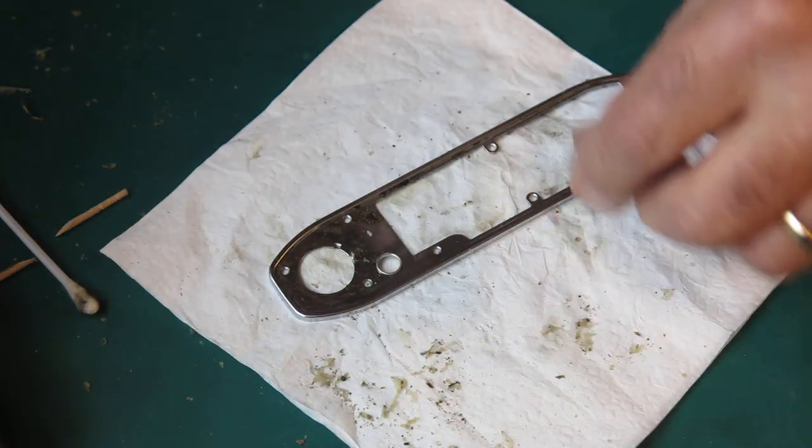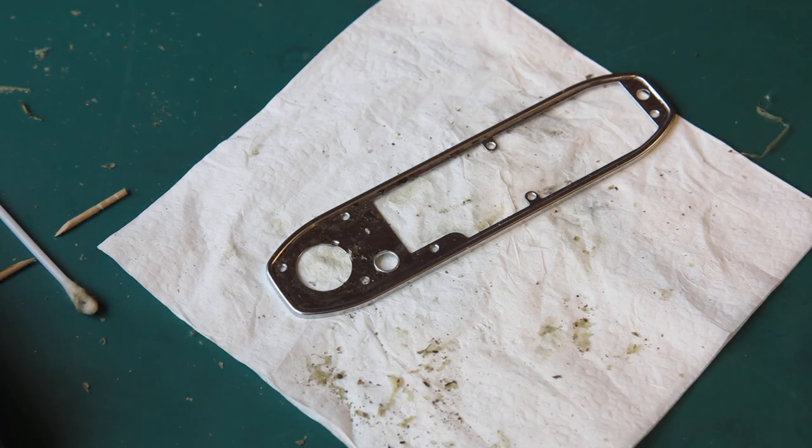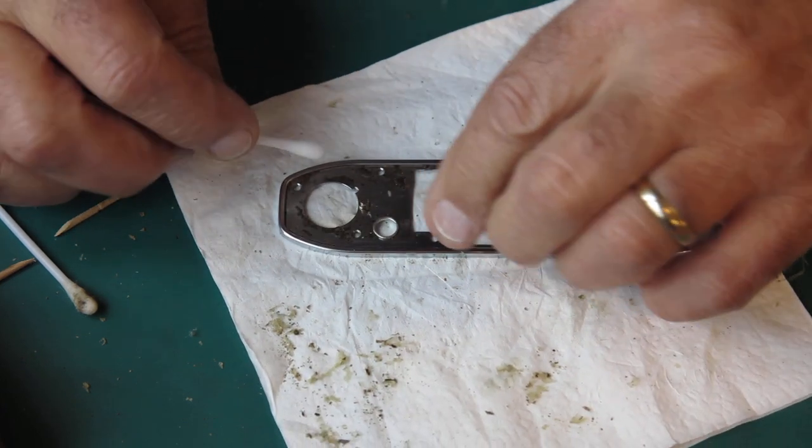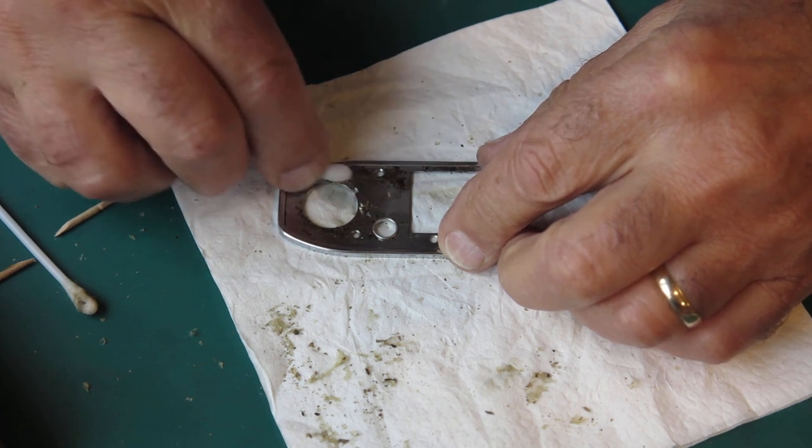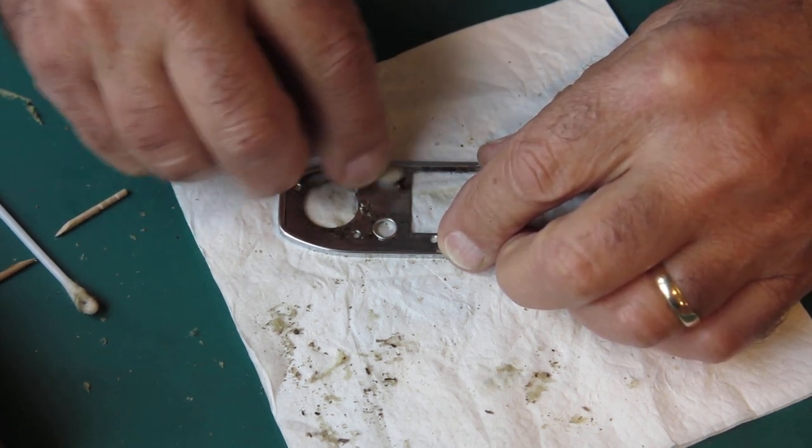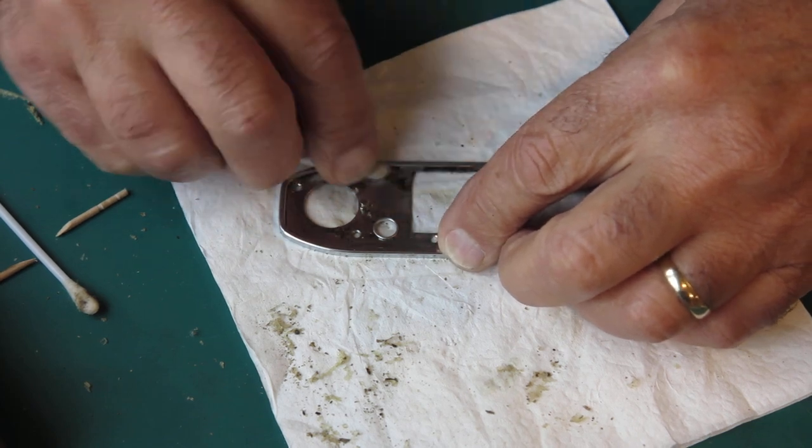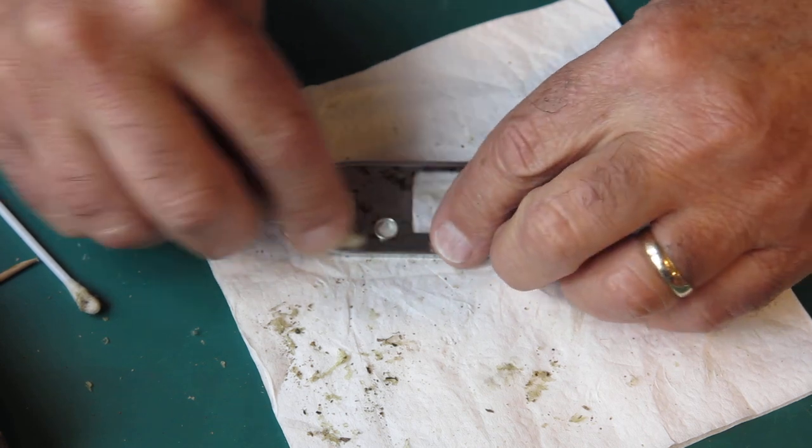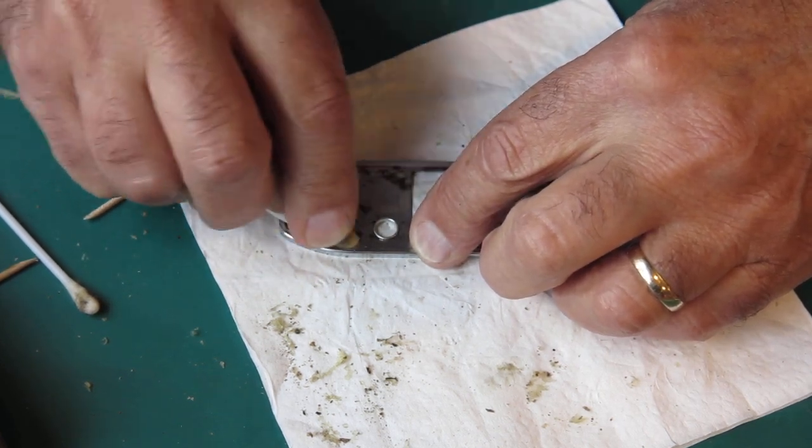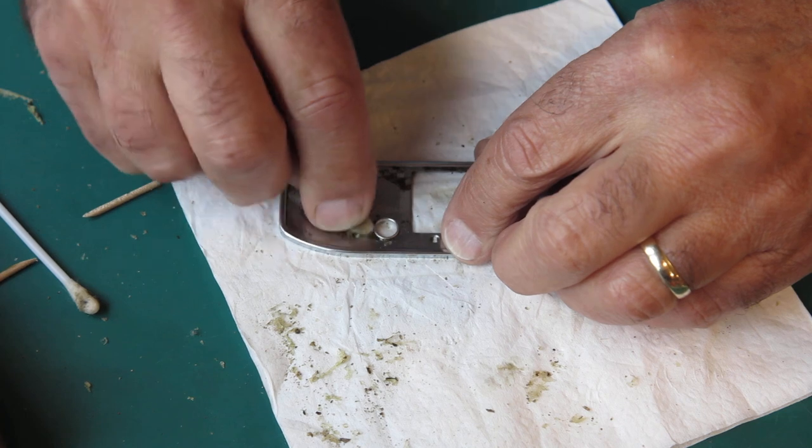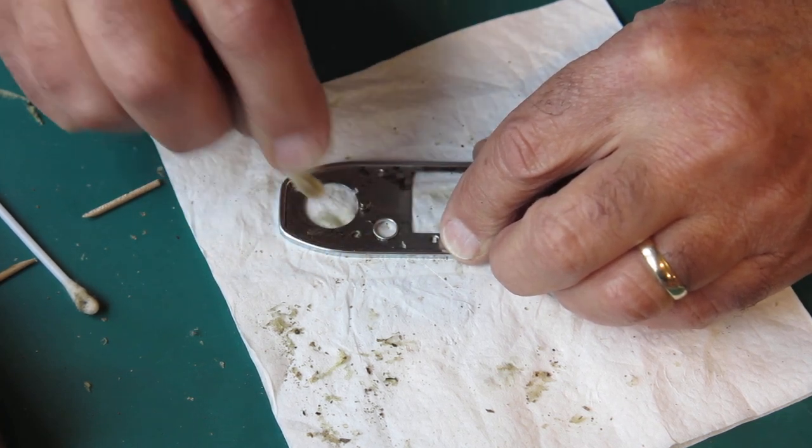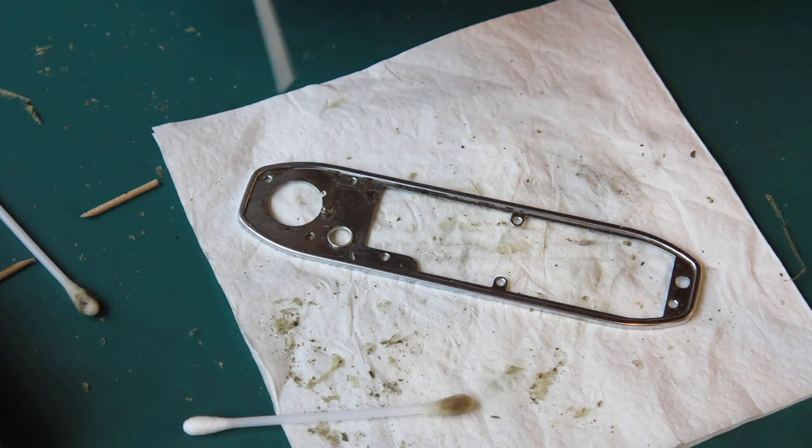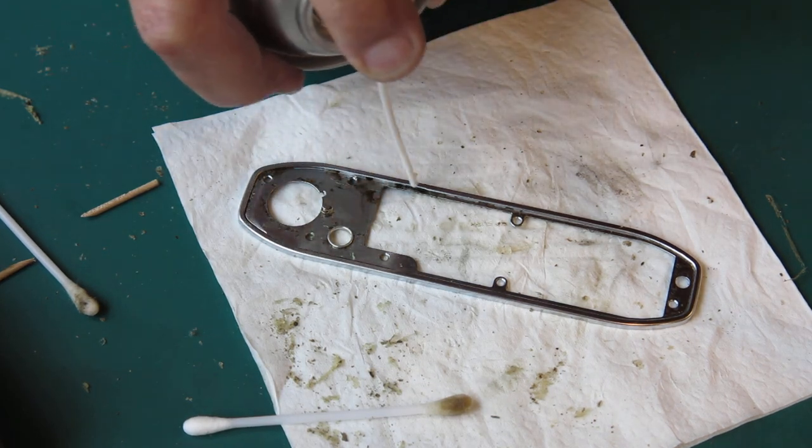Well, acetone didn't make much of an impression on that. The clear or the white adhesive came off well with the acetone. The brown stuff did not. I'm trying something else. This is CRC LectraClean. Yeah, that stuff's softening up now. I'll spray some directly on there and leave it to soak.